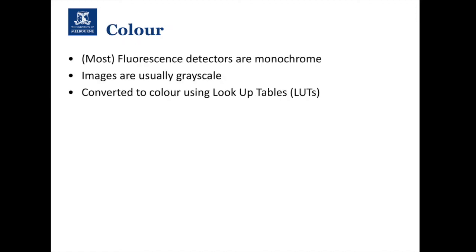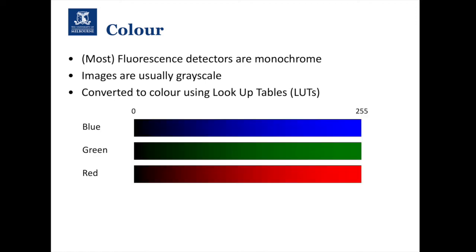First, color: most fluorescence detectors are monochrome, which means your images are usually grayscale. Any color we're seeing is being converted from grayscale into color using something called a lookup table. Three of the most commonly used lookup tables are the blue, green, and red lookup tables. In each case, zero intensity is black, maximum intensity is the chosen color — blue, green, or red — with a linear scale in between.